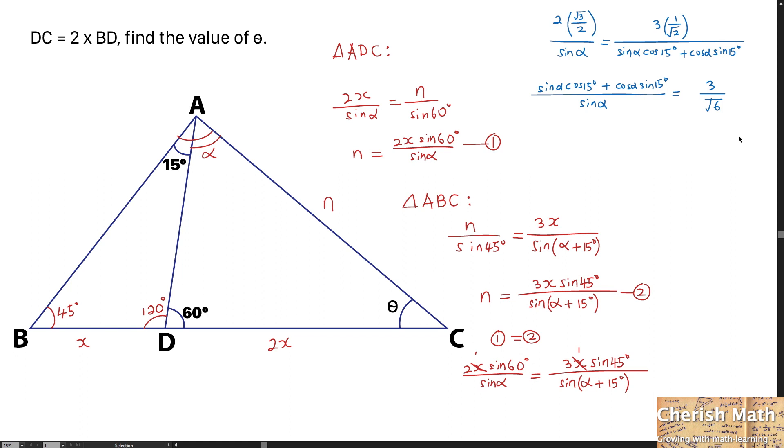Now we simplify. Sine alpha divided by sine alpha simplifies to 1. Cosine alpha divided by sine alpha equals cotangent alpha. The equation turns into this. By making cotangent alpha the subject, the equation becomes this. Eventually, using a calculator, alpha equals 45 degrees.